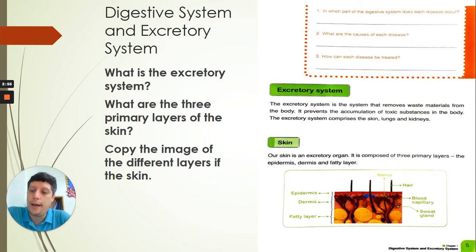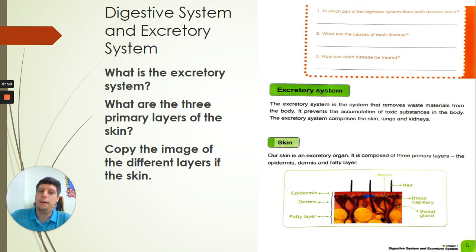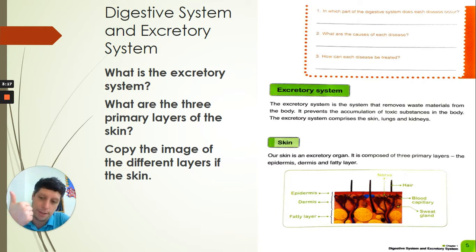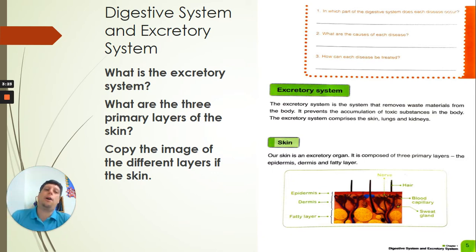There are three ways that we excrete. Excrete means to get rid of — that's why it's called the excretory system, it's the getting-rid-of system. There are three ways that we excrete or get rid of those bad substances from within our bodies: through the skin, through the lungs, and through our kidneys. We're going to look at all three of those today.